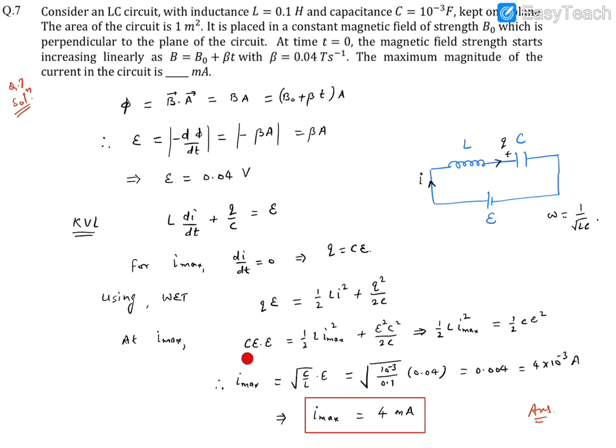Now C is 10^-3, L is 0.1 in SI units, and E is 0.04. When we simplify it, it came out to be 0.004, which is 4 × 10^-3 ampere.